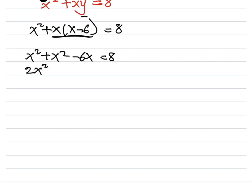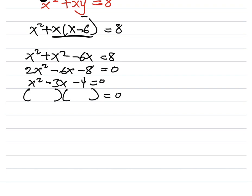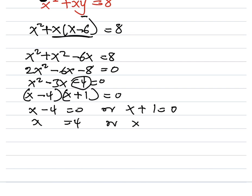We add the x² terms: 2x² − 6x − 8 = 0. Since 2 is common to all, we divide through by 2, giving x² − 3x − 4 = 0. This is a quadratic we can easily factorize. We get (x − 4)(x + 1) = 0, so x − 4 = 0 or x + 1 = 0, giving x = 4 or x = −1.